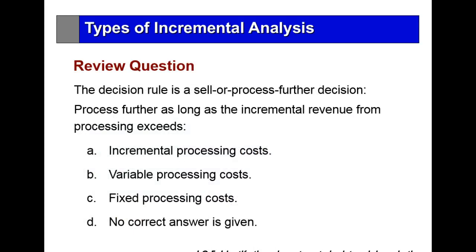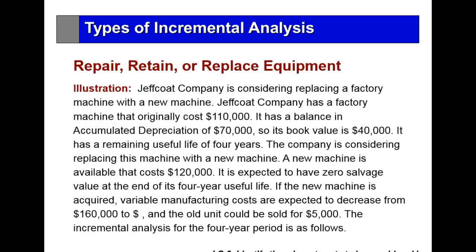The decision rule for sell-or-process-further: process further as long as the incremental revenue from processing exceeds incremental processing cost — that's answer A. Fixed costs are already in the equation and are not relevant to this decision; it's the variable costs that become relevant.